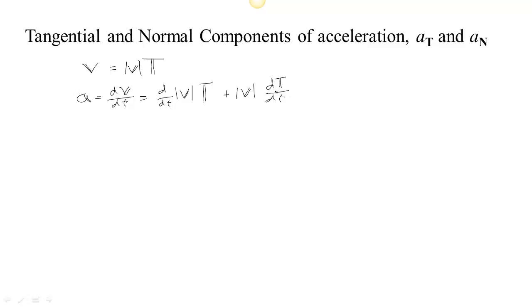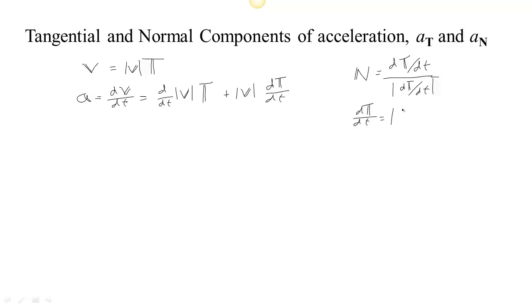The derivative of the tangent with respect to time is actually related to the normal vector. To find the normal vector, we took the derivative of the unit tangent with respect to time and divided by the length of that derivative. So we could solve for the derivative of the tangent with respect to time: it's the length of the derivative of the unit tangent with respect to time times the unit normal.